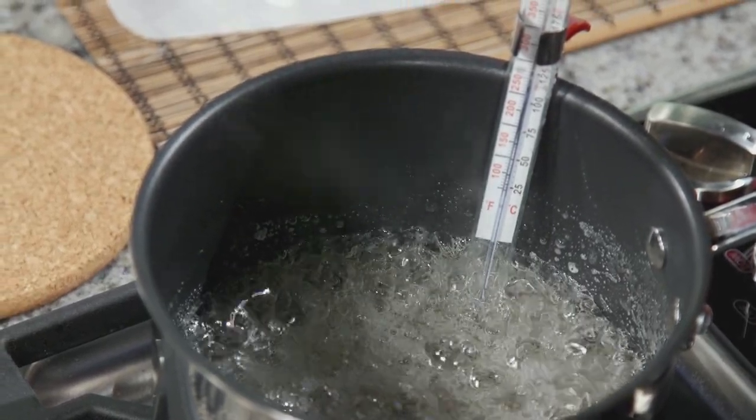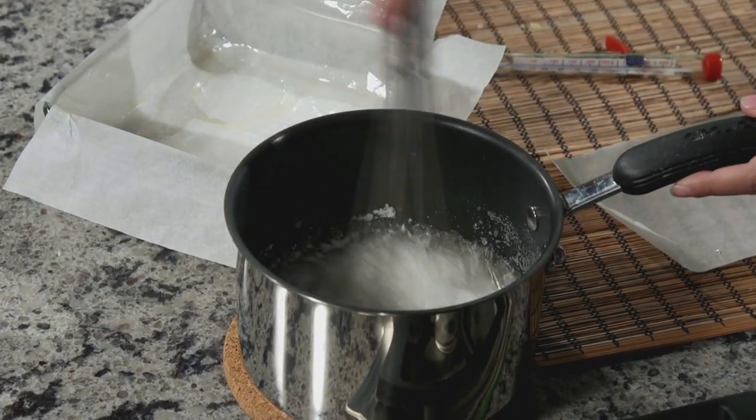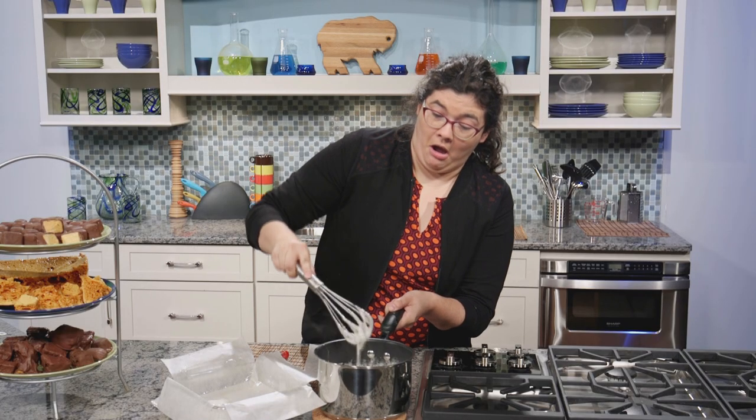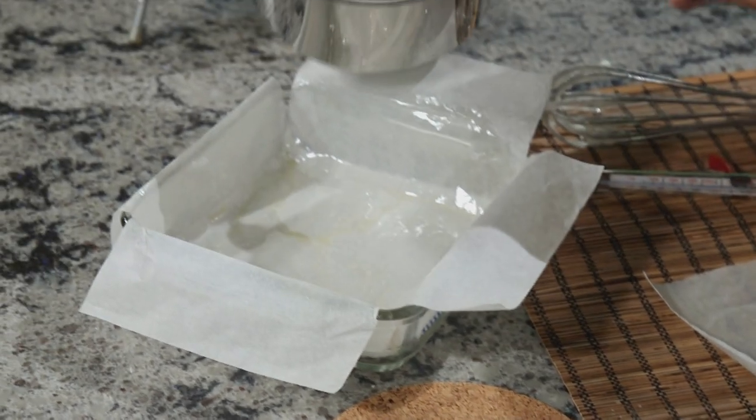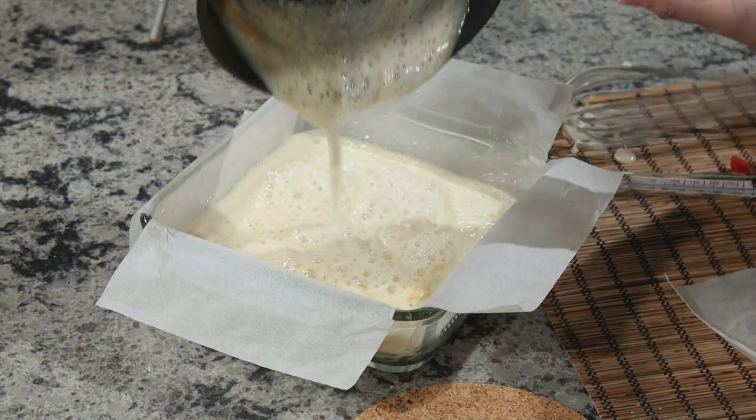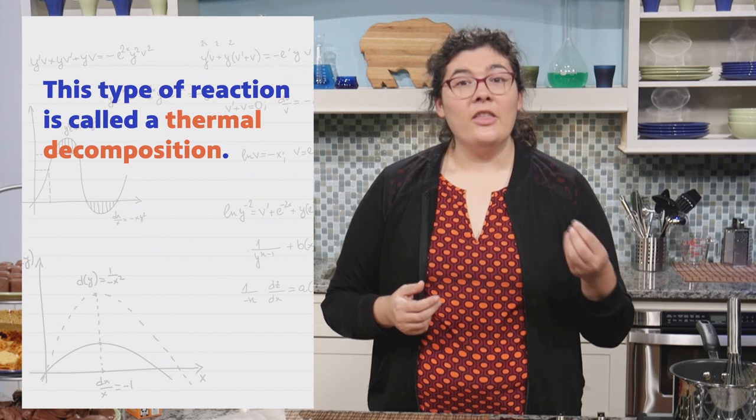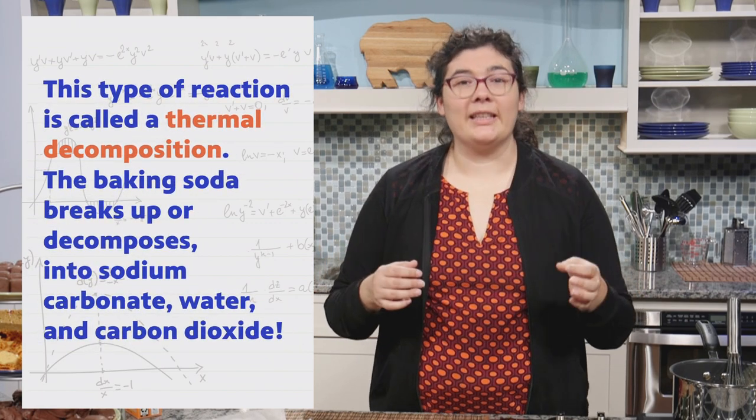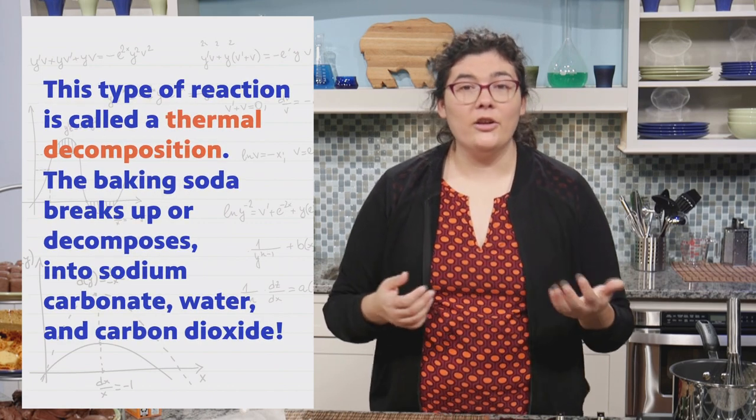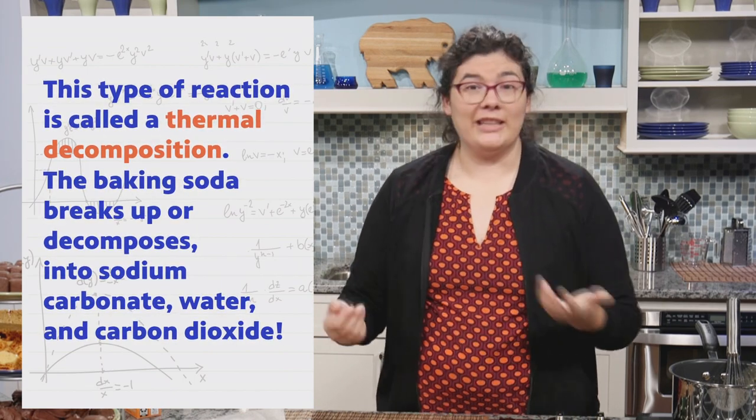All right, now that our mixture has reached 300 degrees, prepare yourselves. It's time for some kitchen science. Now it's time to add the magical ingredient: baking soda. Whoa, look at that! It happened so fast. What's happening here? When the baking soda, also known as sodium bicarbonate, is mixed into the hot sugar, another chemical reaction occurs. The baking soda breaks up, or decomposes, into sodium carbonate, water, and carbon dioxide. The water vapor and carbon dioxide gases get trapped in the sugary mixture, leaving behind these bubbles.